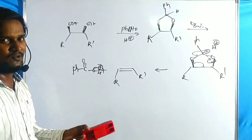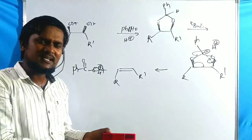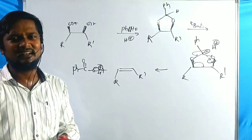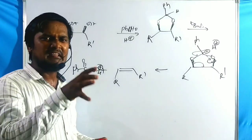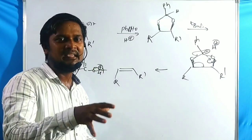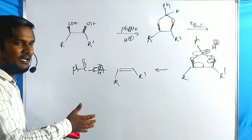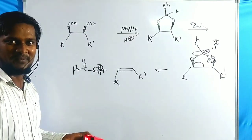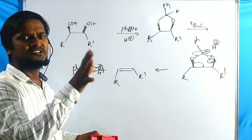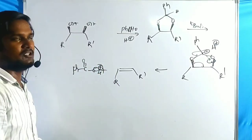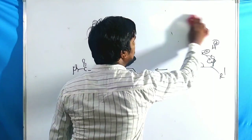The main advantage of Corey-Winter fragmentation is that it can form very sterically hindered olefins — some olefins that cannot be prepared by any other method can be prepared using this approach, including strained olefins.